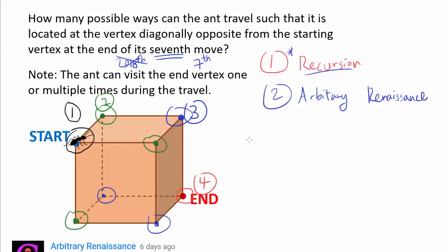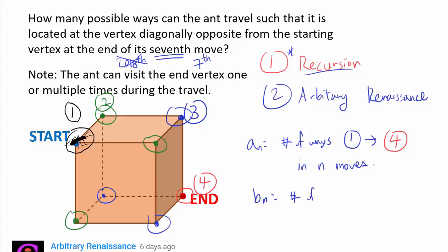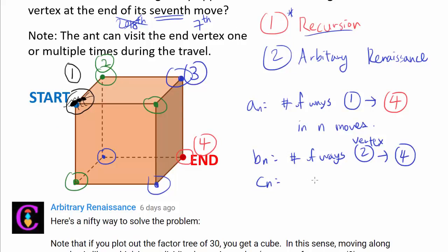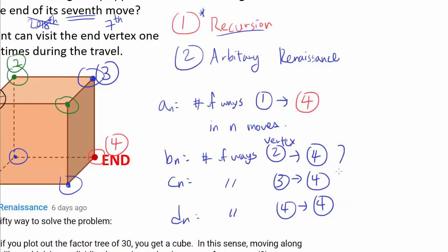Let's define some notation. Let a_n be the number of ways of going from the start vertex (group 1) to the end vertex in n moves. Let b_n be the number of ways to go from one of the vertices in group 2 to the end vertex in n moves. Let c_n be the number of ways to go from group 3 to the end in n moves. And d_n is the number of ways of starting at the end vertex and finishing at the end vertex in n moves.